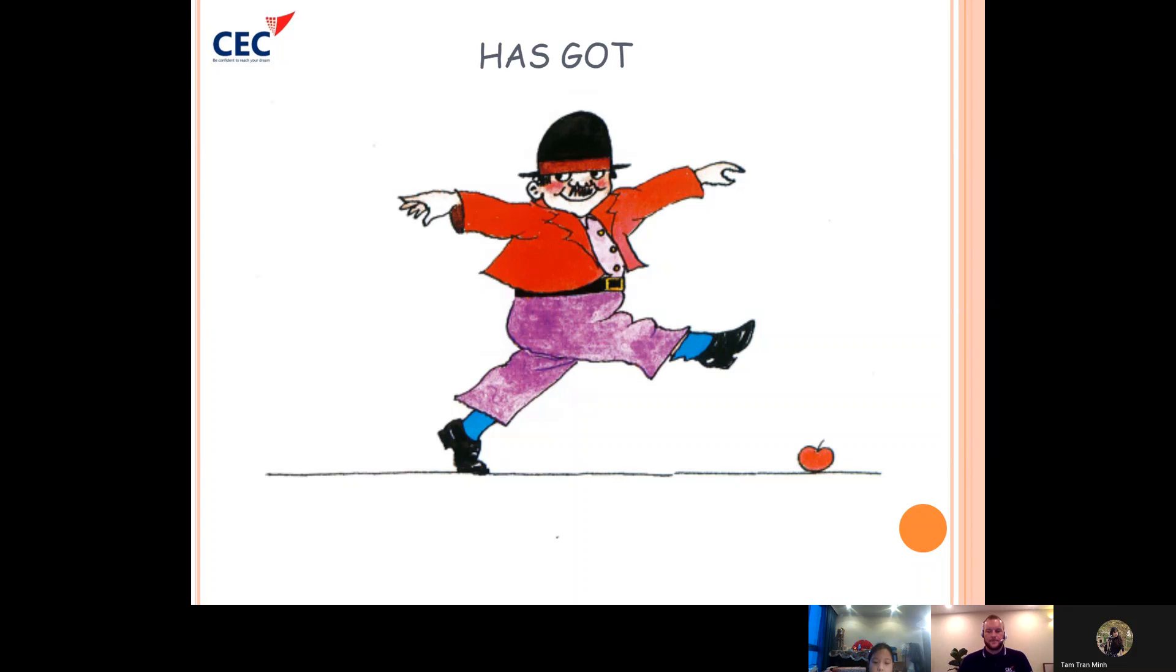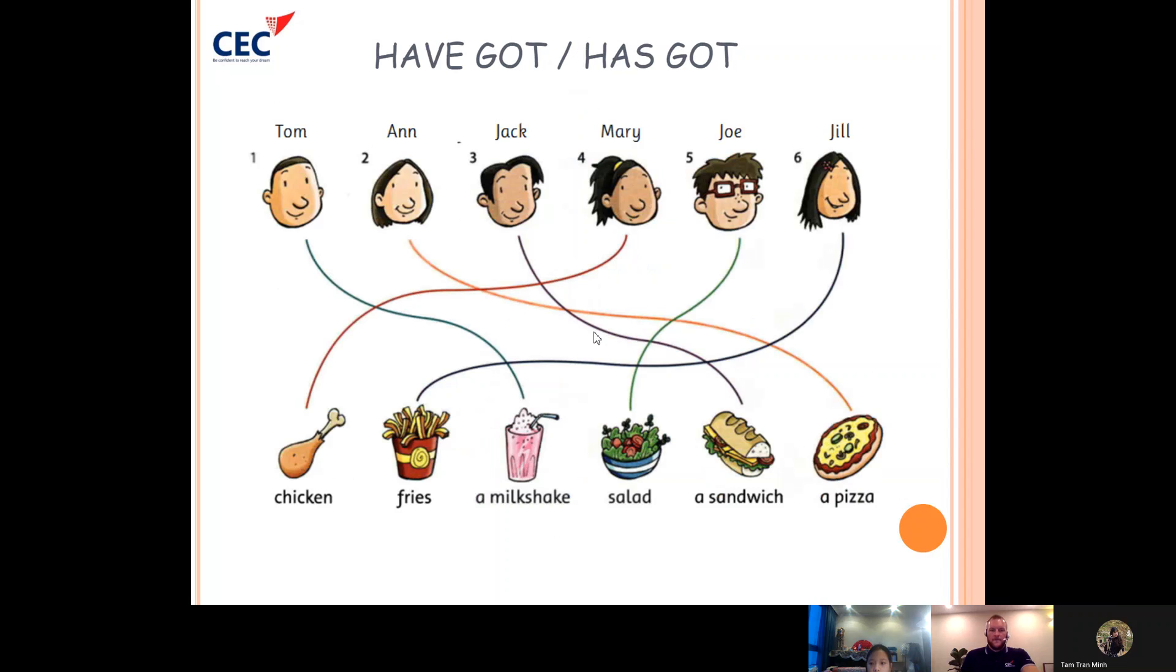Okay, can you tell me three things Mr. McGee has got? Mr. McGee has got a black hat, a red t-shirt, and purple trousers.